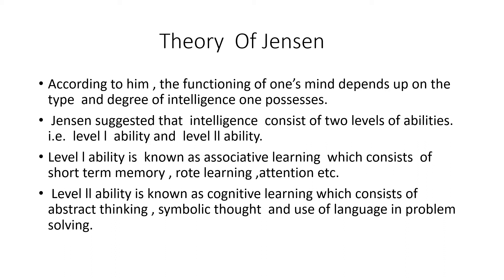Level 1 ability is known as associative learning and Level 2 ability is known as cognitive learning. Level 1 consists of short-term memory, rote learning, and attention. I am going to explain each term one by one.